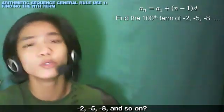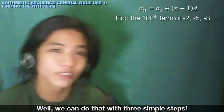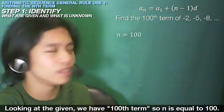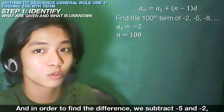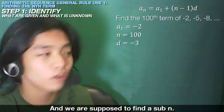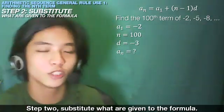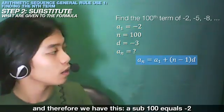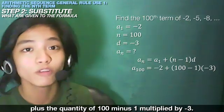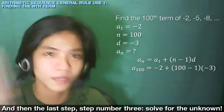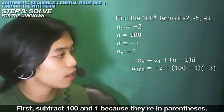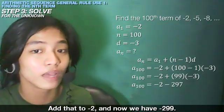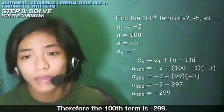What if we were to find the 100th term of the infinite sequence -2, -5, -8, and so on? Step 1: identify what is given. n equals 100, a sub 1 equals -2, and d equals -3. Step 2: substitute into the formula. We get a sub 100 equals -2 plus the quantity of 100 minus 1 multiplied by -3. Step 3: solve. Subtracting inside the parentheses gives 99, then multiply by -3 to get -297. Add that to -2 and we have -299. Therefore, the 100th term is -299.